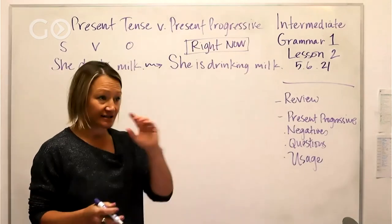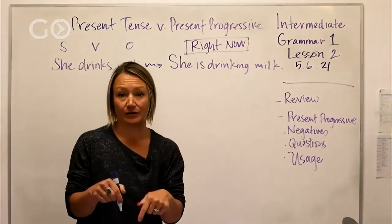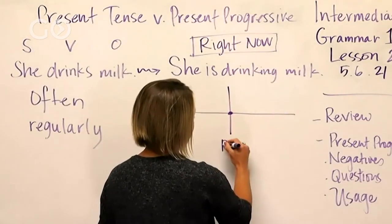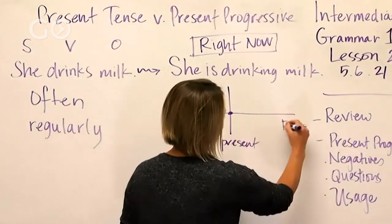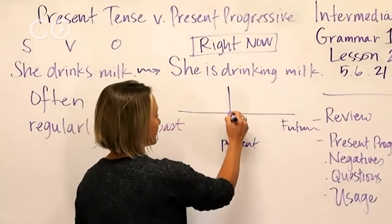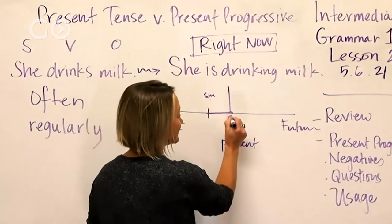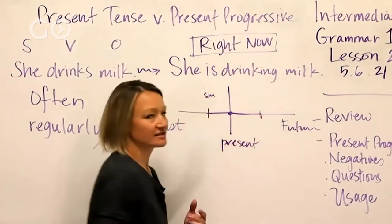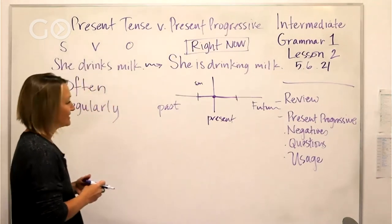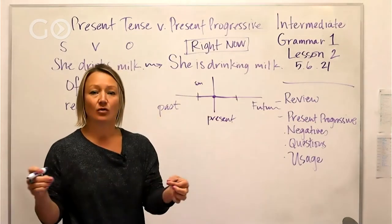So if I look at this girl and she's holding a glass of milk and drinking it right now in this moment — on a timeline, here is the present, the future, and the past. This is something happening right now, maybe started five minutes ago, continues right now, and possibly goes into the future. This chart shows it's happening now and may continue into the future.